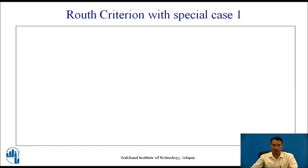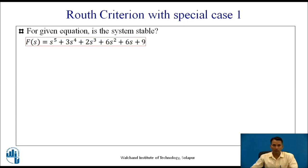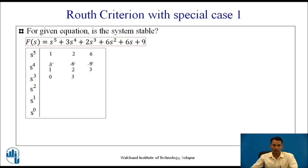Let us have an example on Routh Criteria with Special Case 1. For the given equation, find the stability of the system. We can write the Routh table as: for s raised to 5, the coefficients are 1, 2, and 6. For s raised to 4, we have 3, 6, and 9 — dividing this row by 3 gives new values of 1, 2, 3.